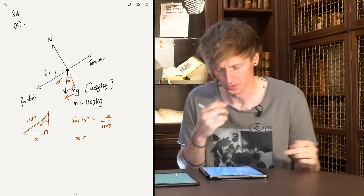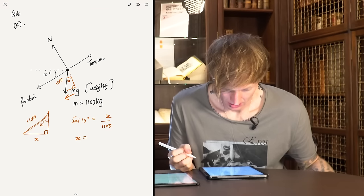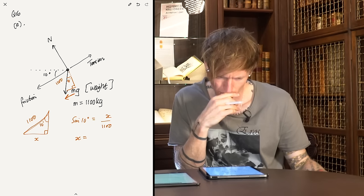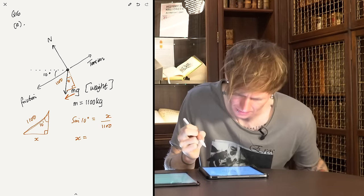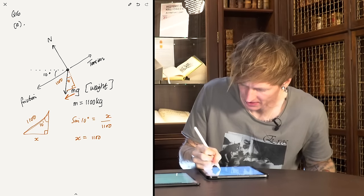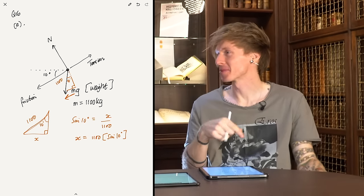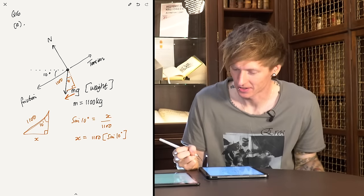You do get a calculator in a physics exam, but am I definitely doing this right? I'm unsure — I've definitely got the opposite. Maybe it's not 10 degrees... No, it has to be 10 degrees. The component of weight acting down the slope is about 1900. But I've looked at the mass there, not the weight. So I'm supposed to multiply the 1100 by 9.81. That's what I was doing wrong — I've used the mass and forgot to multiply by g.